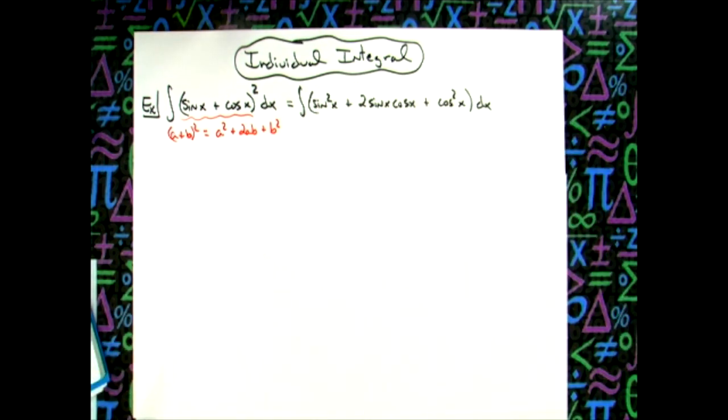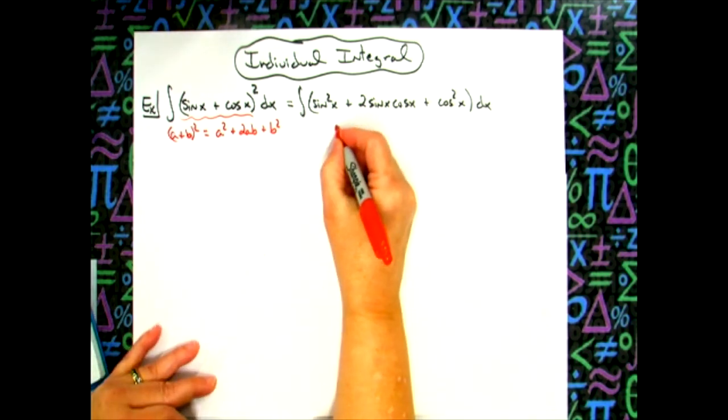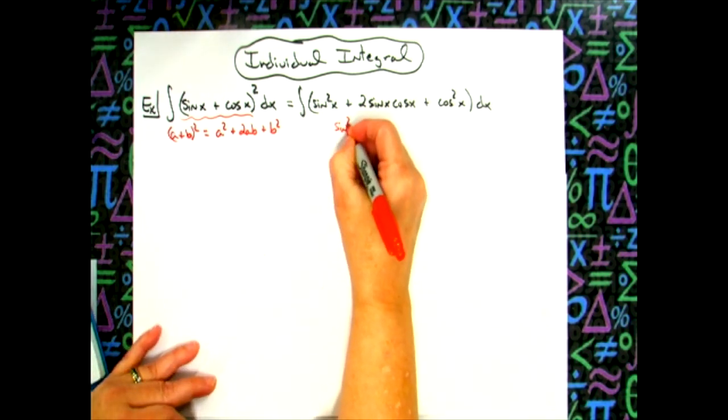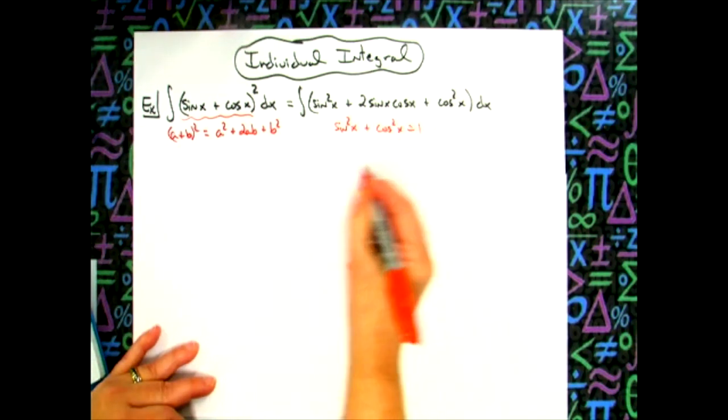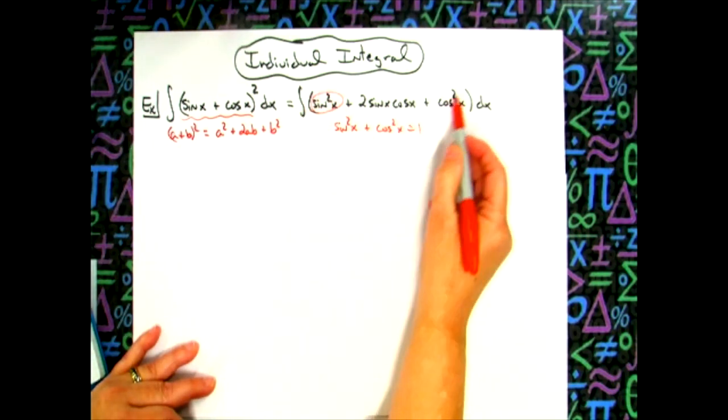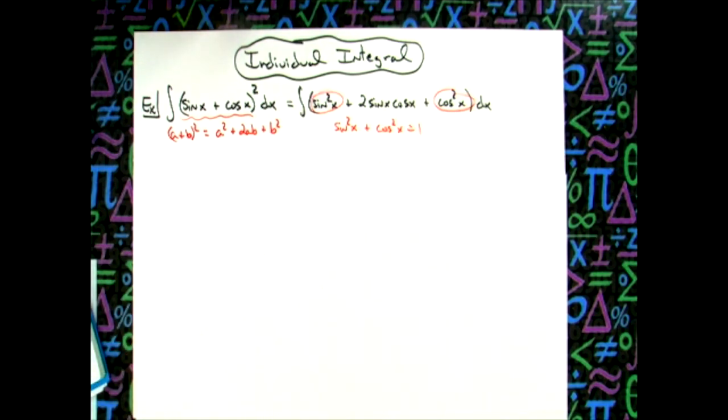Now what we're going to do is we're going to use a Pythagorean identity. We know that sine squared x plus cosine squared x equals one. And I have a sine squared x and a cosine squared x there that is being added, so I could replace that with a one.